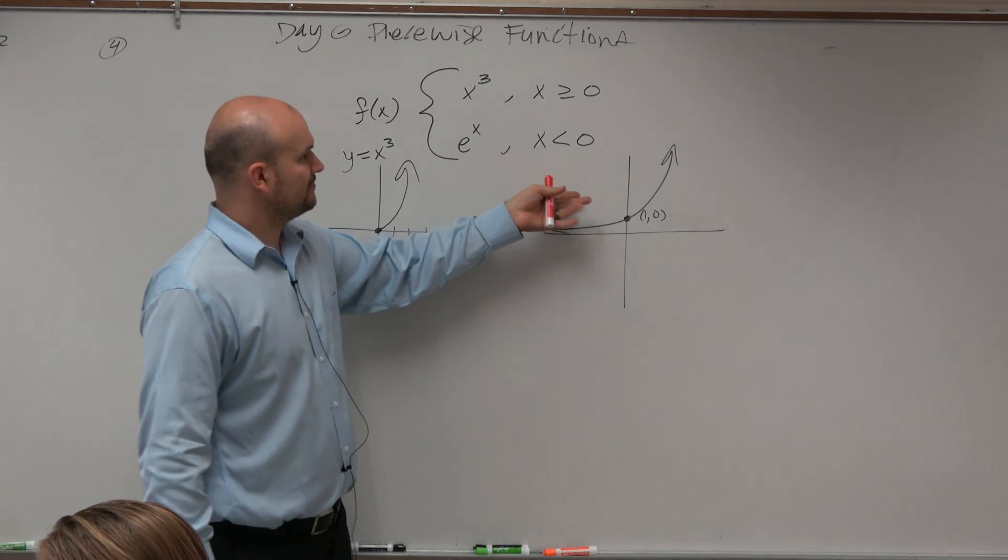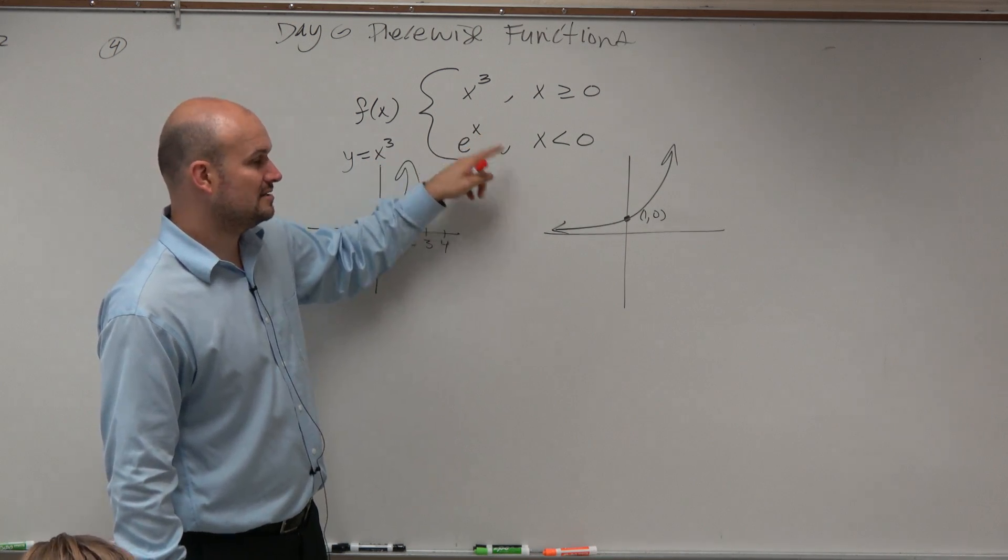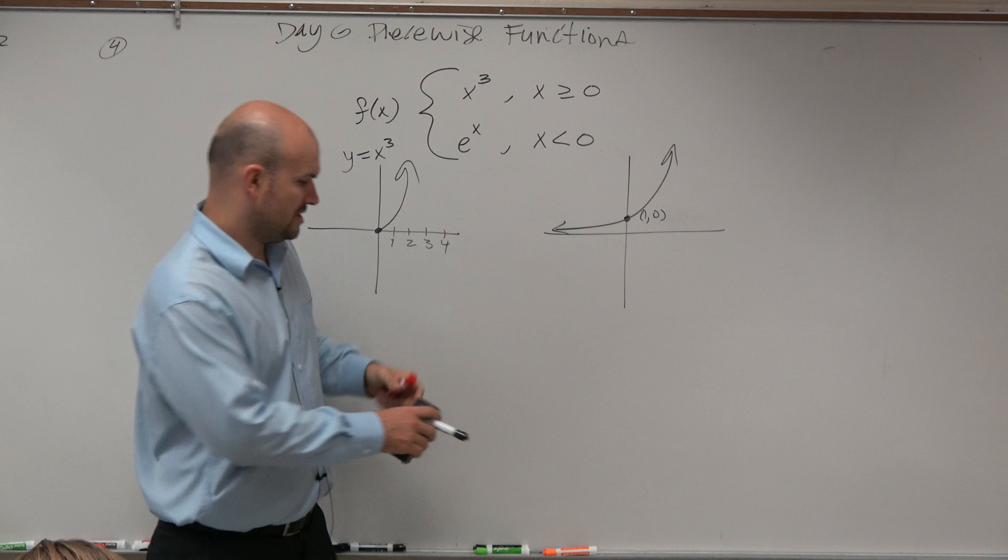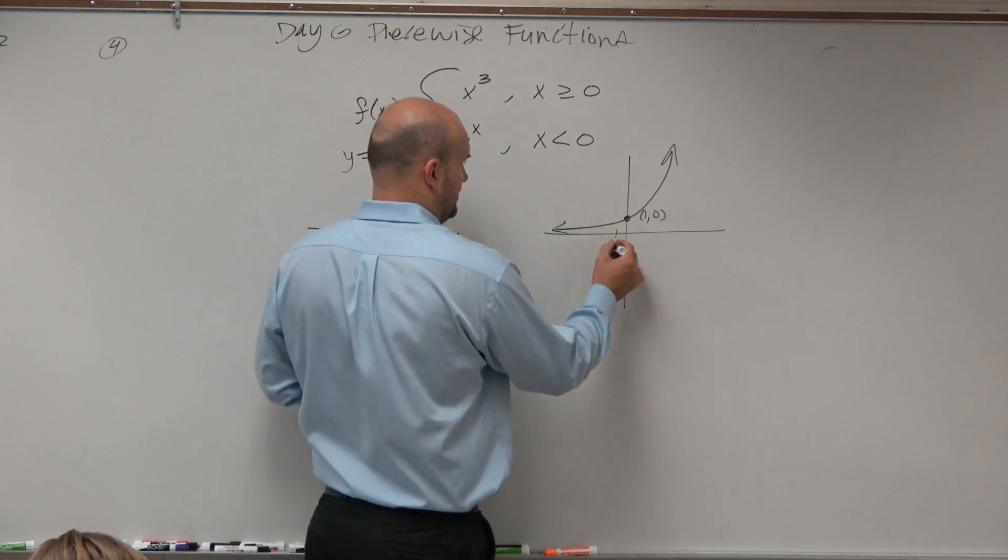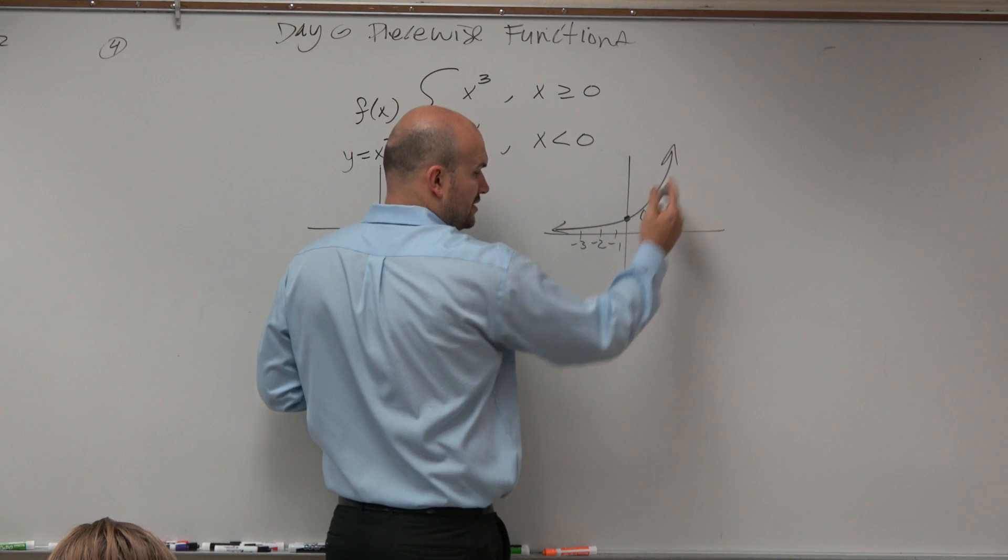Now let's go into the next one, e to the x. It says only graph e to the x when x is less than 0. So where are the values x is less than 0? Well, that's to the left of the y-axis, right? So we don't want to graph anything over here.